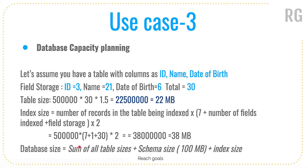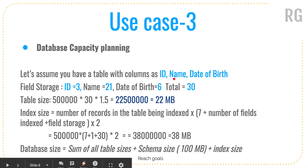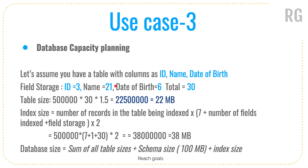Let's take a small example. We have a table with three columns: ID (3 characters), name (21 characters), and date of birth (6 characters) — totaling 30 characters per record. For 500,000 records: 500,000 × 30 × 1.5 = 22 MB. The 1.5 is a buffer amount so we don't rely on an exact table size.